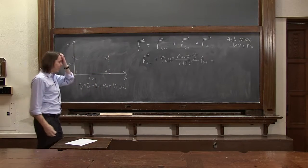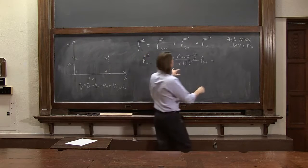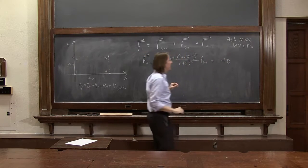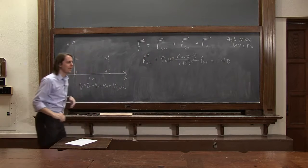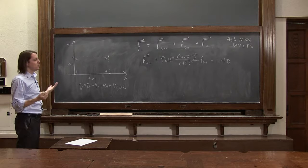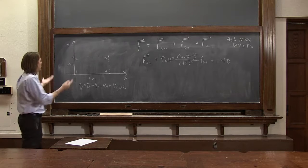You plug in all those numbers, you get 40. It comes to be 40. And now we have to think about the direction. And this is an aspect of the problem, sometimes you call it inspection. Which way is R hat 2,1? Well, you just look at it.